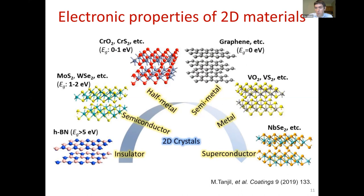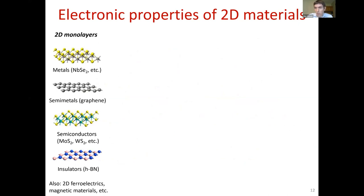If you think that the breadth of monolayer structures is all the field offers, you'd be wrong — it offers much more. Beyond different band gaps, there have been recent papers on two-dimensional ferroelectric materials. This property in two-dimensional form is a very recent discovery. There are also examples of two-dimensional magnetic materials, which present exciting opportunities for electronic applications. But this is just monolayers — a lot more happens when you start stacking those layers.